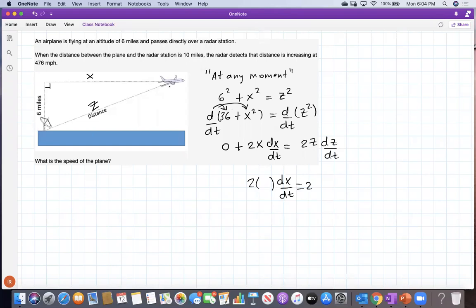Do we have z? Yes, we do: 10 miles according to the information given in our word problem. At that moment, when this distance is 10 miles, they want you to compute the speed of the plane at that moment.